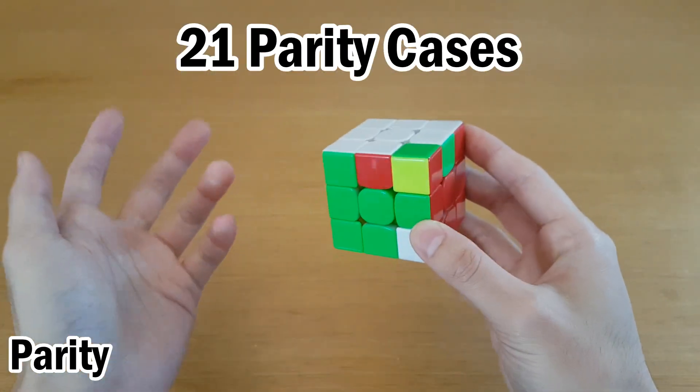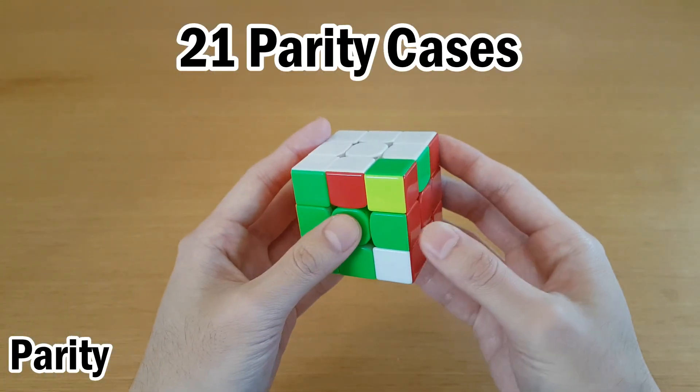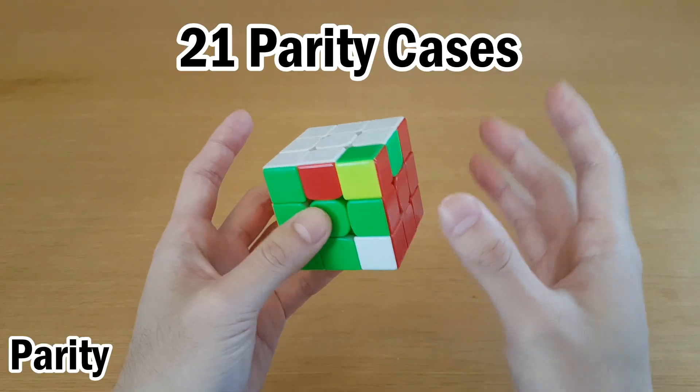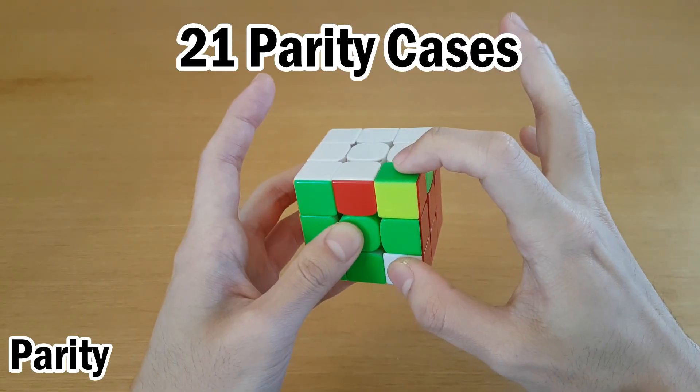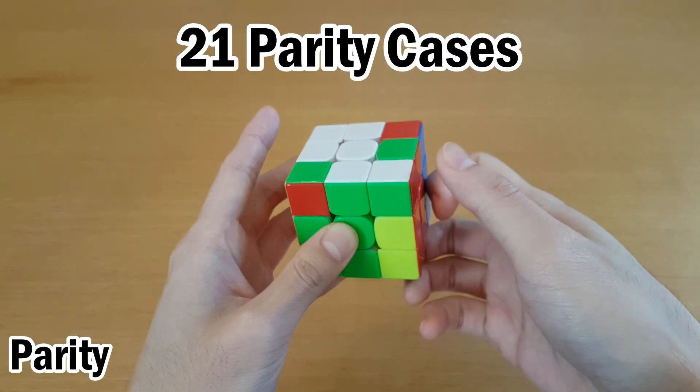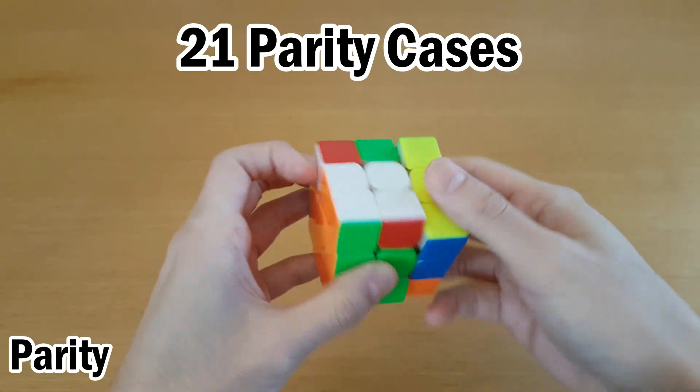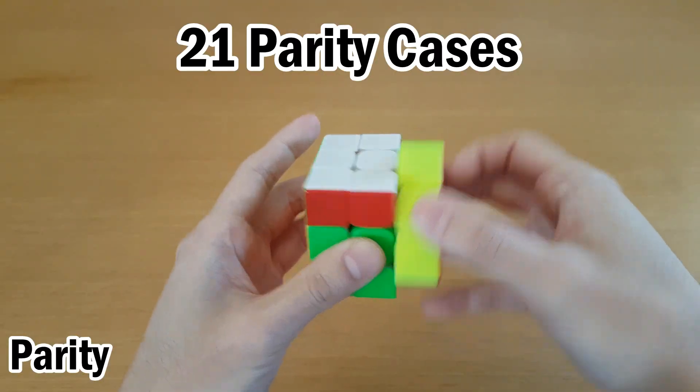There are 21 cases and I won't show them all, but they follow a very similar idea to each other. Most of the time, it's some sort of setup to a Jperm. So in this case, I have these two edges and these two corners. So I can do U, R, U' and now it's a Jperm. Then solve the Jperm and undo the setup moves.